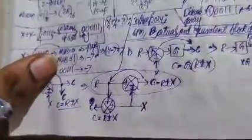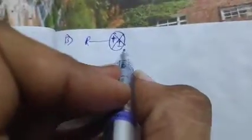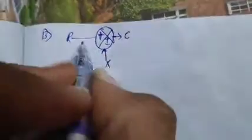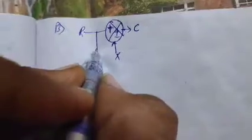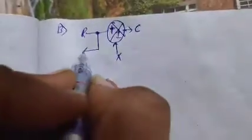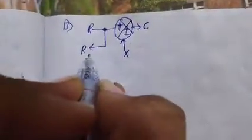Now coming to another block diagram. Let us assume we have the input as R given to the summing point which has two inputs — one for X — and the output is going to be C. Right here is the takeoff point which provides the value as R.